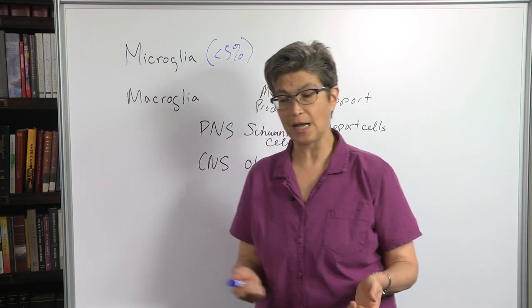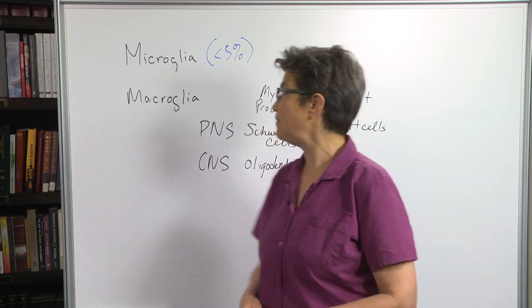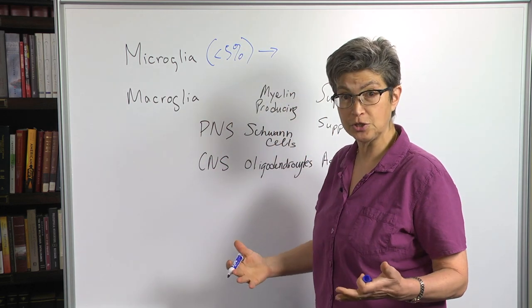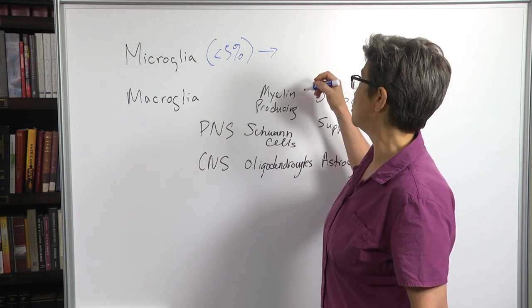And so just as macrophages do, when they see damage, they go around, they scavenge stuff up. And they become, in the light of damage, in the light of infections, inflammation, trauma, they become what's called reactive.